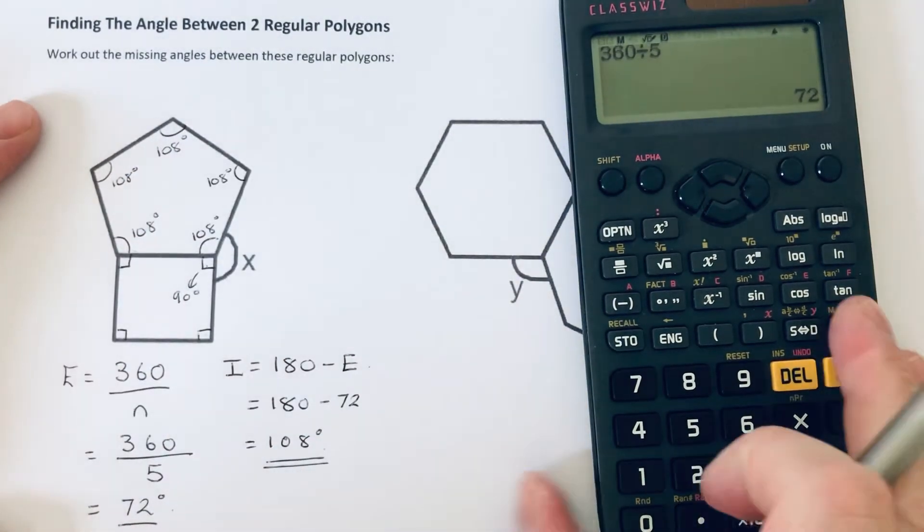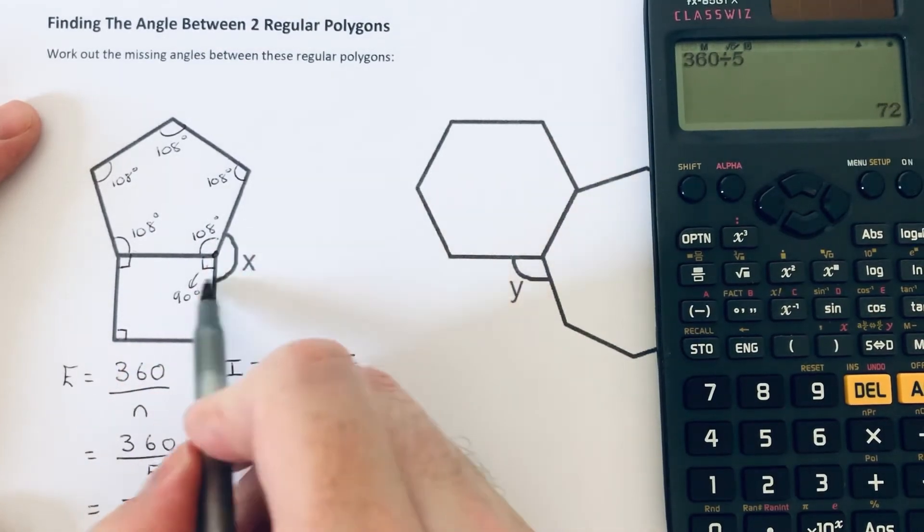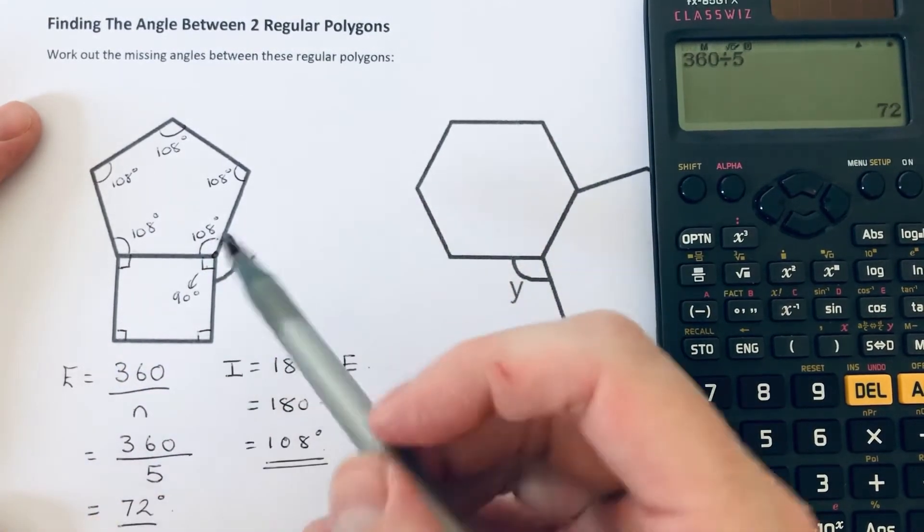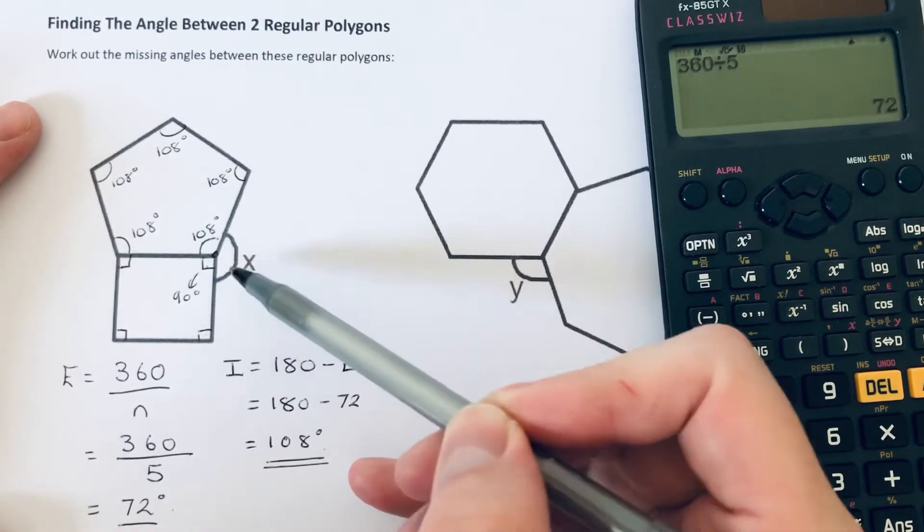So we can now use angles around a point or a circle to figure out angle X. So we just need to add these two angles up here and take the answer off 360.